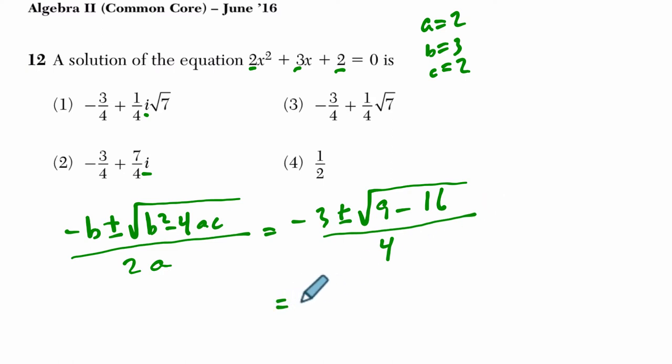And that's going to become negative 3 plus or minus 9 minus 16, here's our imaginary part, is negative 7, taking the square root of negative 7 over 4.